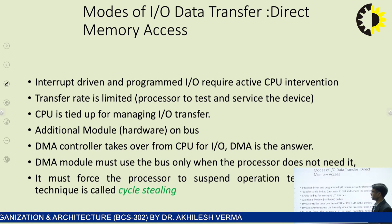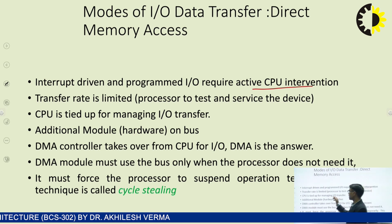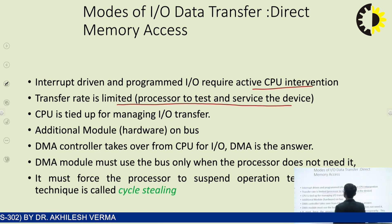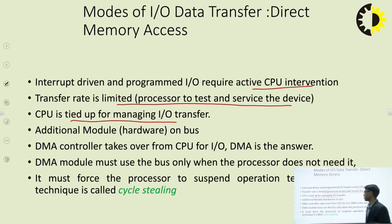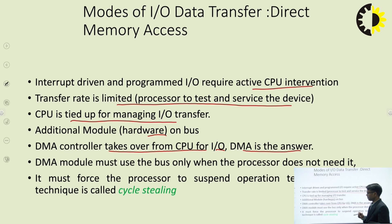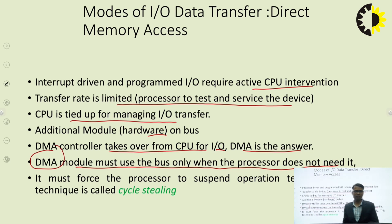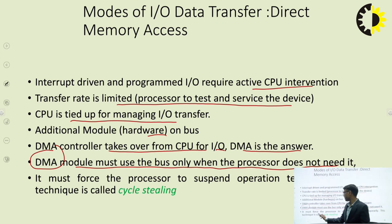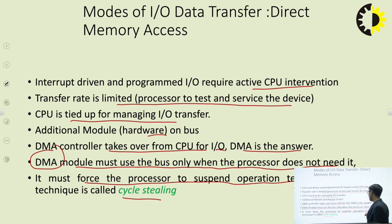Interrupt-driven and programmed IO require active CPU intervention, the transfer rate is limited, the processor must test and service the device, and the CPU is tied up managing IO transfer. DMA uses additional hardware module on the bus — the DMA controller takes over from the CPU for IO. The DMA module must use the bus only when the processor does not need it, using only a few cycles. The mechanism used is called cycle stealing — it forces the processor to suspend operation temporarily for a few cycles.